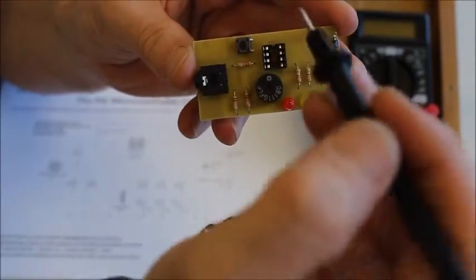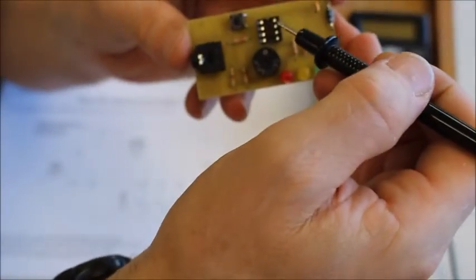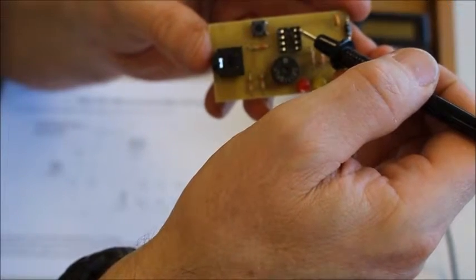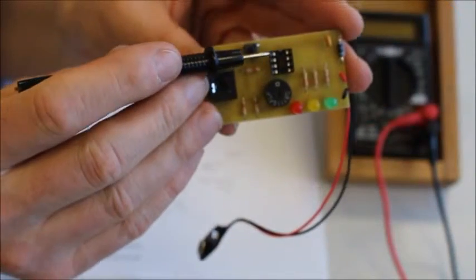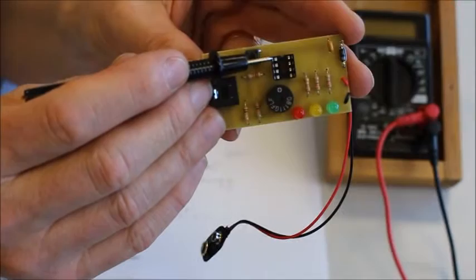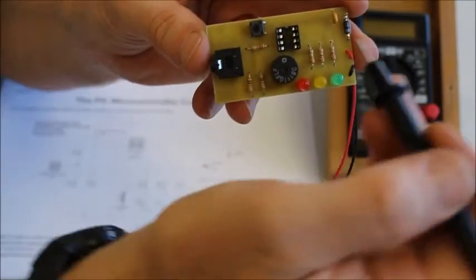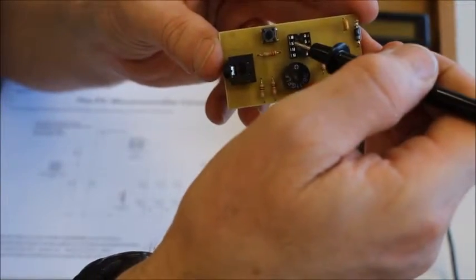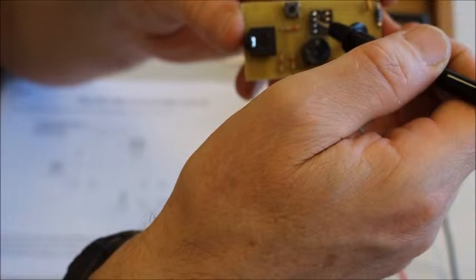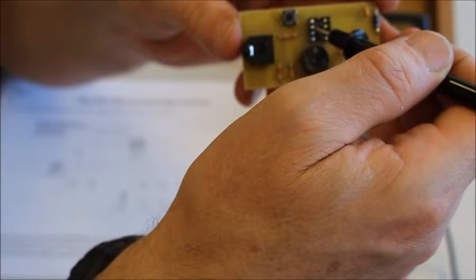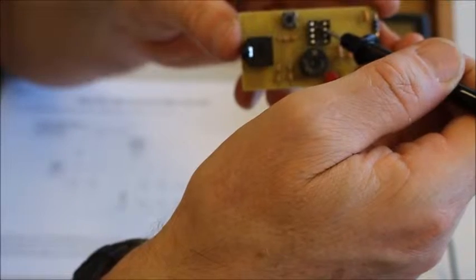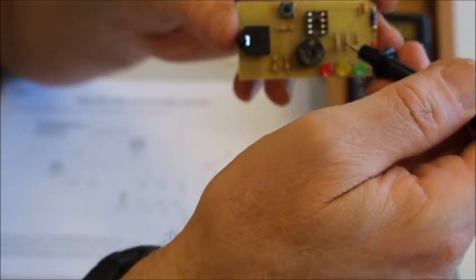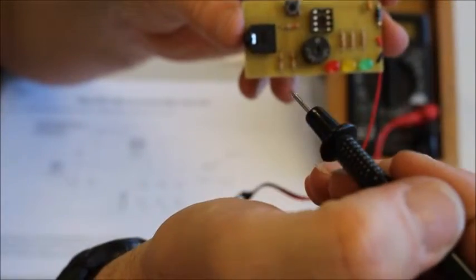The other connections on the PICAXE chip is ground in pin 8 and in pin 1 we've got power supplied. We've also got connected to pin 2, the PR connection for the PICAXE and on pin 7 we've got the ST connection for the PICAXE comms and both those connect to there.